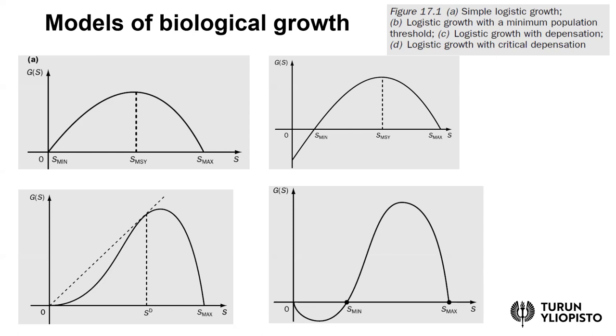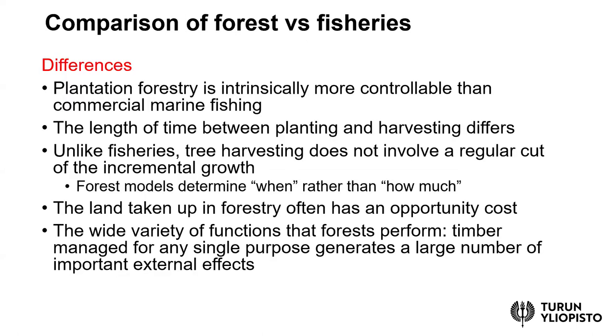Let's consider some major differences in these types of renewable assets. First, if we talk about forestry, some kind of managed forestland is intrinsically more controllable than fish stock in the sea or ocean. The fish can swim away, but the trees are not mobile.